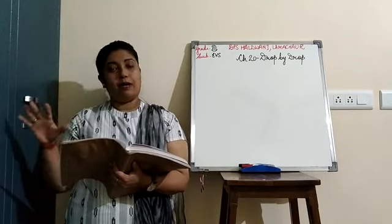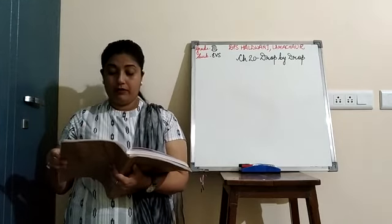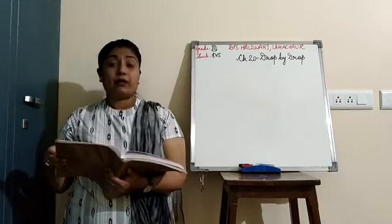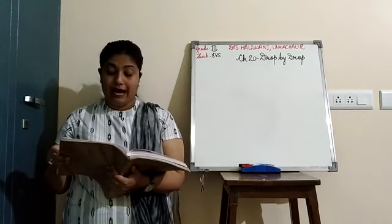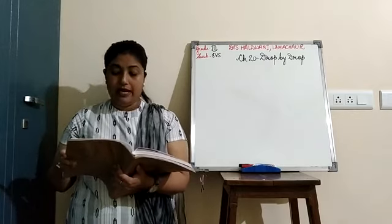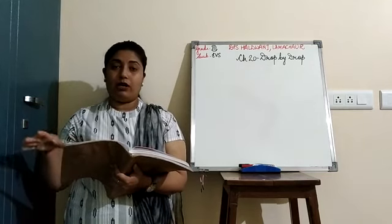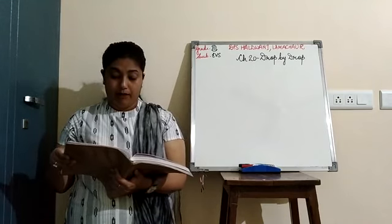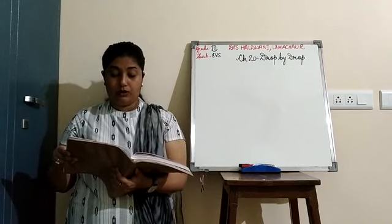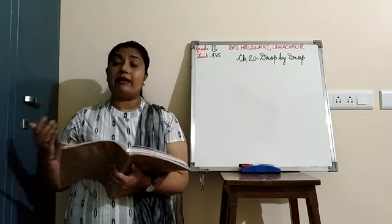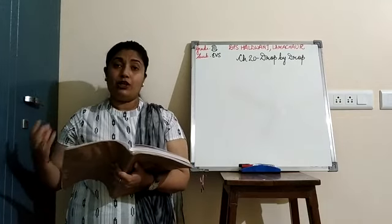The tanka is made paka and kept covered with a lid — ek dhakkan se usse cover kiya jaata hai. The roof of the house is made sloping so that the rainwater collected here flows through a pipe into the tanka. A sieve is attached to the mouth of the pipe so that no dirt goes into the tanka. This water is used for drinking after it is cleaned.